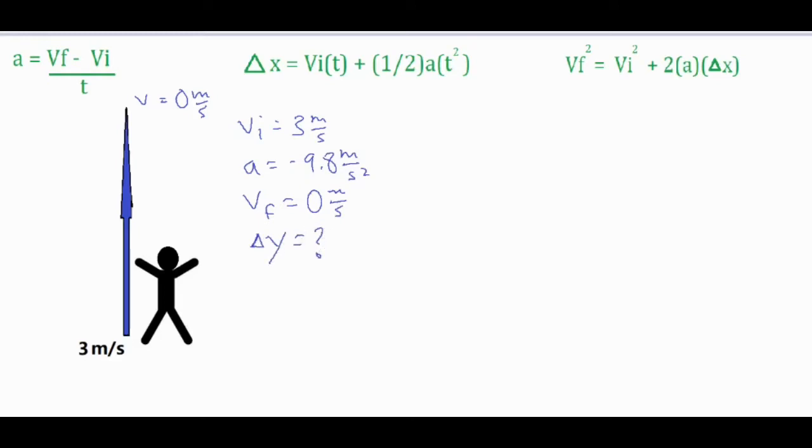Delta y is basically the same thing as delta x. Delta x is just in the horizontal direction. If I take a look at my formulas, I'm going to use this third formula over here because this is the only one that has a displacement in it with all of the three variables that I currently have. Let me go ahead and plug into that third formula and see what I get for the delta y.